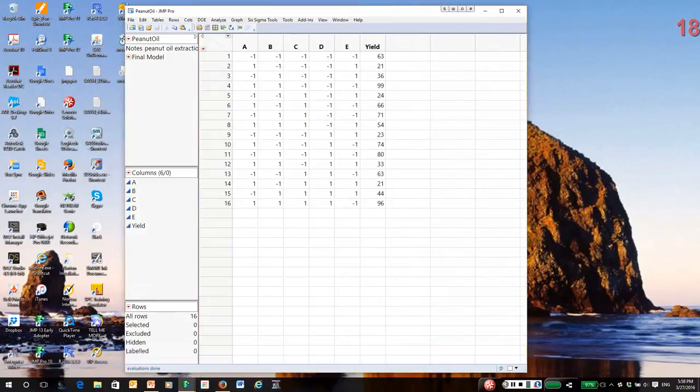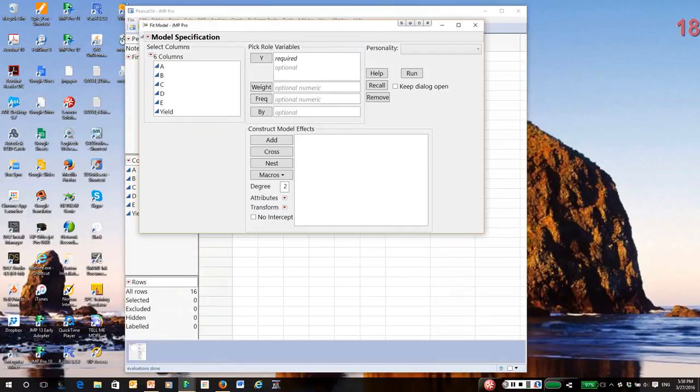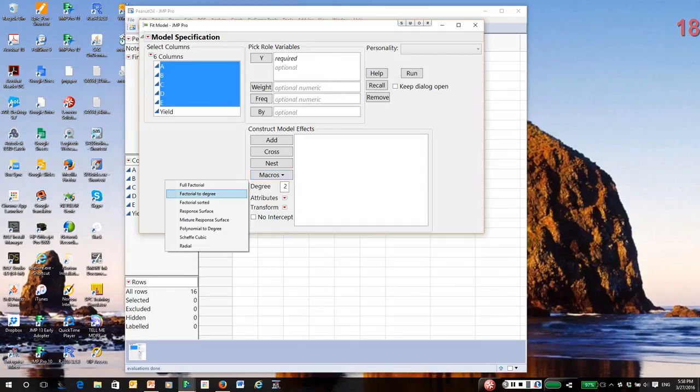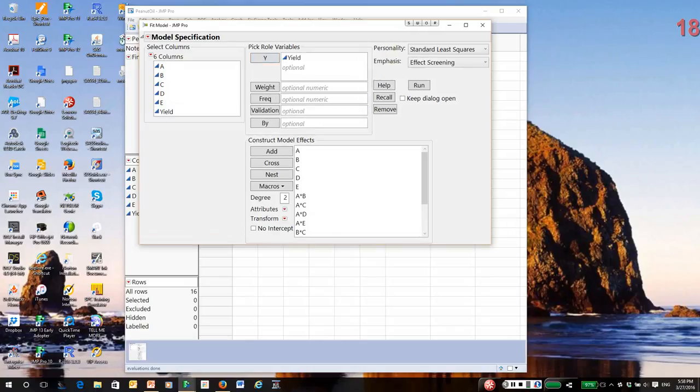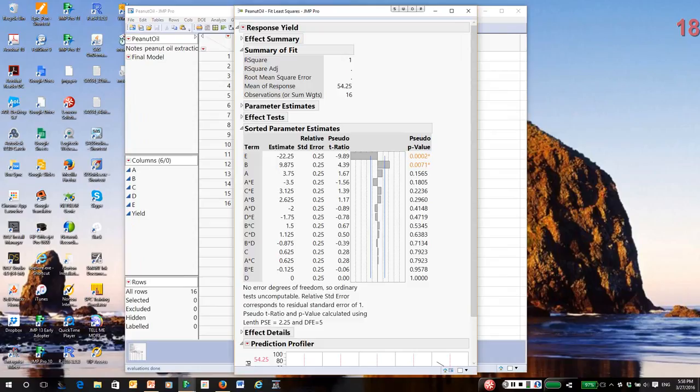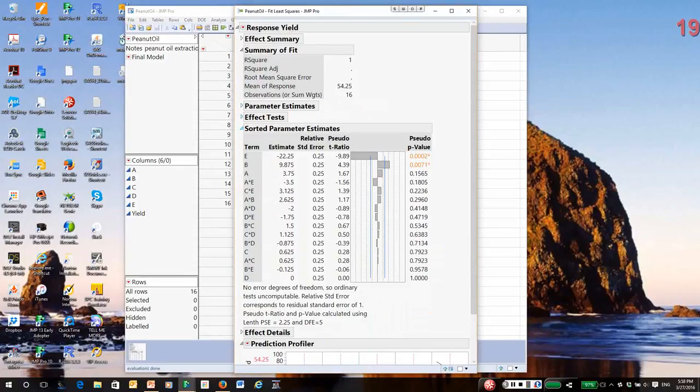You can't have an alias in a model. It's like putting the same term in the model twice. The equal sign means that DE is entirely equal to ABC. They cannot be separated. So I'm going to go back to fit model. And this time, notice it's to degree two in the fit model window. I'm going to highlight ABC, D, and E. Click on the macros button and factorial to degree two. And so the three ways are not in the model. Click on yield and run.